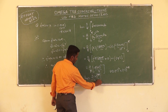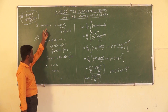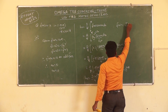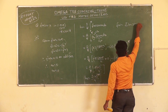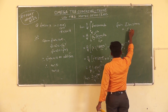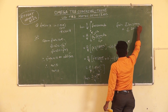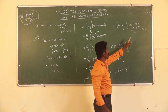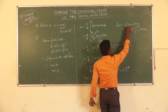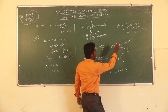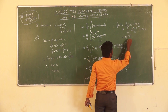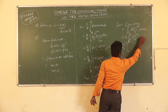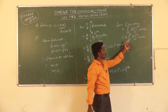So bₙ = 2·(−1)^(n+1)/n. Since the given function is odd, a₀ = 0 and aₙ = 0. Therefore the Fourier series is: f(x) = summation of bₙ·sin(nx) = 2 × summation from n = 1 to ∞ of [(−1)^(n+1)/n]·sin(nx).